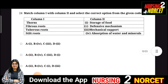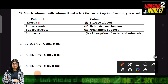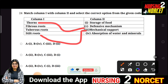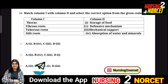Question 24: Match the following — plant parts with their functions. Thorns function as a defense mechanism. Stilt roots provide mechanical support. Tuberous roots store food. Fibrous roots absorb water and minerals. Match the correct options to get the right answer.